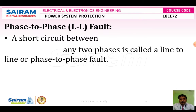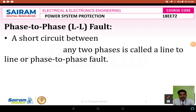Phase-to-phase fault: a phase-to-phase fault is a short circuit between any two phases, called as a line-to-line or phase-to-phase fault. A short circuit happens between any two lines. In a three-phase three-wire or three-phase four-wire transmission system, there is a chance of a double-L fault or triple-L fault occurring. Double-L faults and triple-L faults are called phase-to-phase faults.